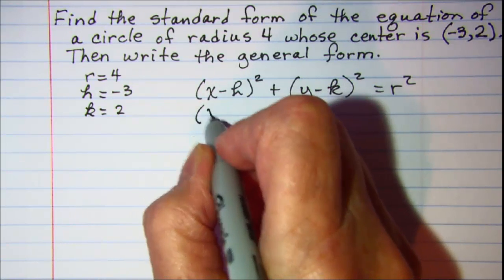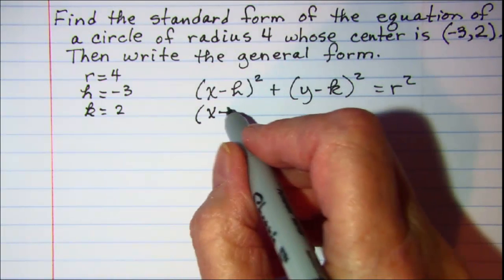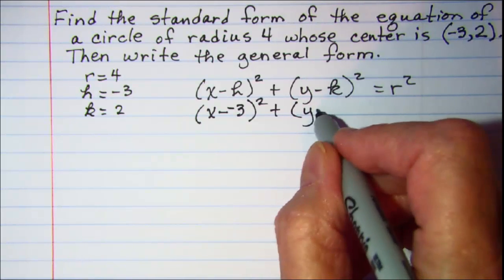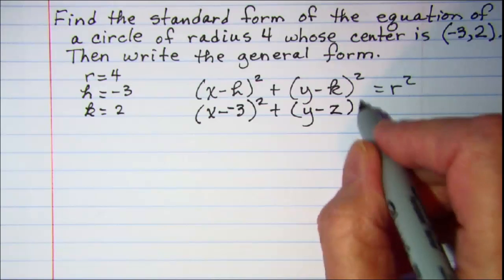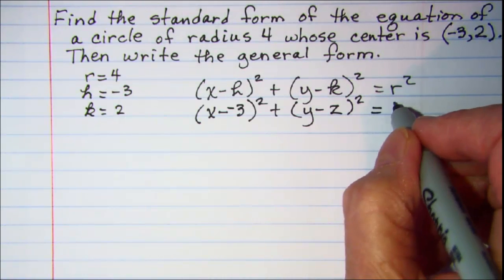So our standard form is x minus, and then h is -3, quantity squared, plus y minus, and then k is 2, quantity squared, equals, and then r is 4, and that's 4 squared.